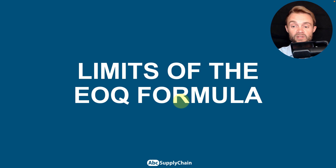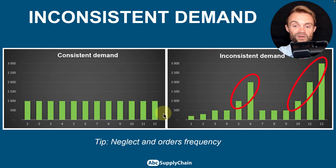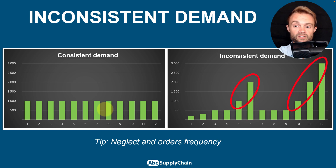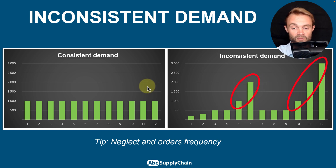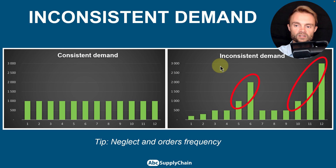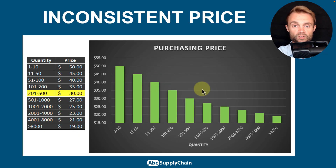Now let's talk about the limitations of the EOQ formula, which was invented over 100 years ago. The first limitation is that it assumes consistent demand — the same every month or week. In reality, Nike shoes sell more during Christmas or Black Friday. That said, you don't have to follow the order frequency exactly; sometimes you'll order twice the usual quantity, but the EOQ still points you in the right direction to optimize replenishment.